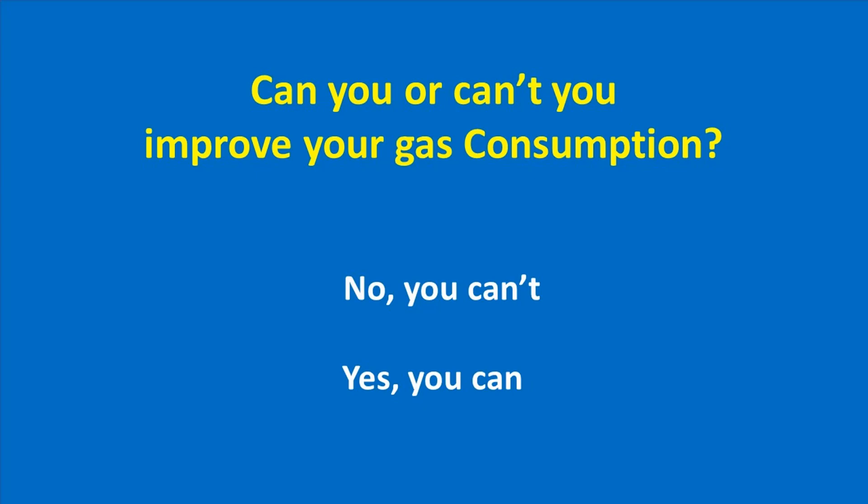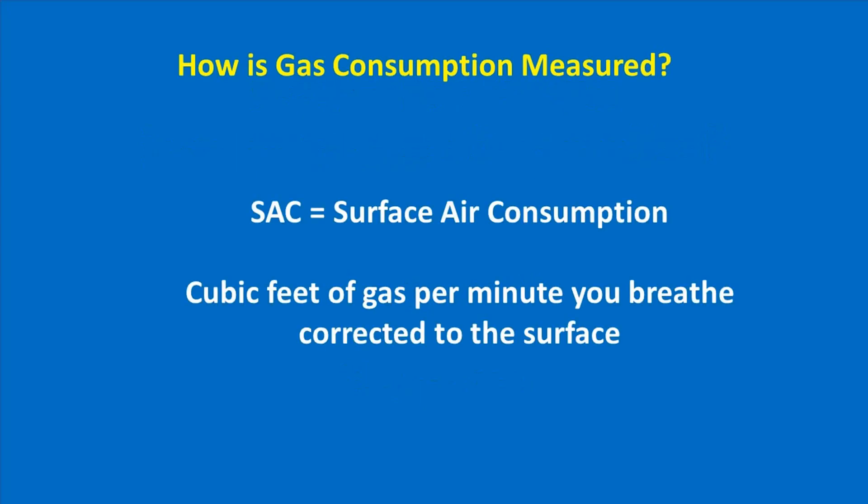Before we discuss this issue, let's look at how gas consumption is actually measured. For the purposes of this video we're going to measure gas consumption in SAC, which stands for surface air consumption. This is the cubic feet of gas per minute that you breathe, corrected to the surface — because at depth you breathe more gas the deeper you are. There is another term called RMV, respiratory minute volume, which is different from SAC because RMV is not corrected for the surface, whereas SAC is. This gives us an apples-to-apples comparison. If you're interested in learning how to calculate your SAC rate, there is another video on the channel.